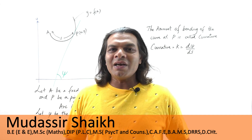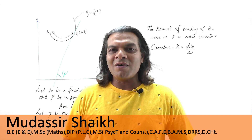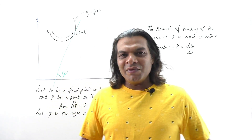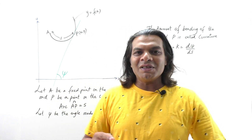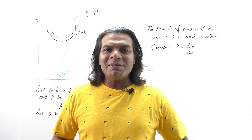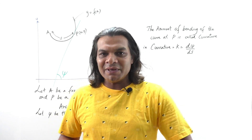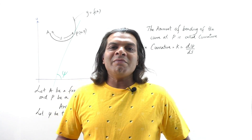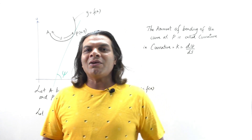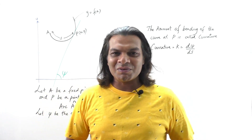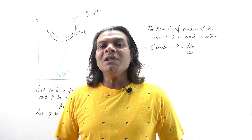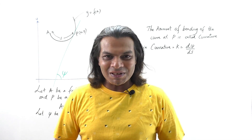So till now, we are in the first module of the V2 Engineering Maths syllabus. We are already done with some derivations: the problem based on angle between radius and tangent vector, problems based on the orthogonality of curves and the angle of intersection of two polar curves. In the last video, we solved problems based on pedal equations.